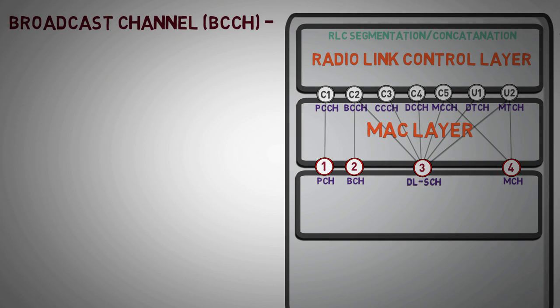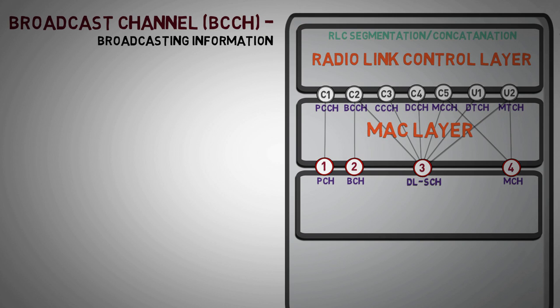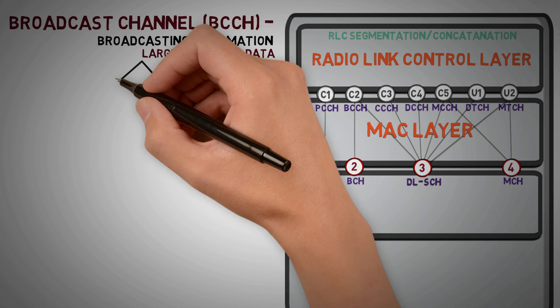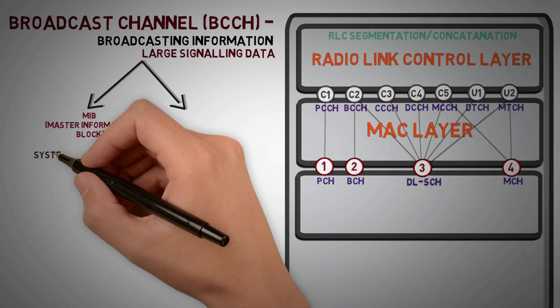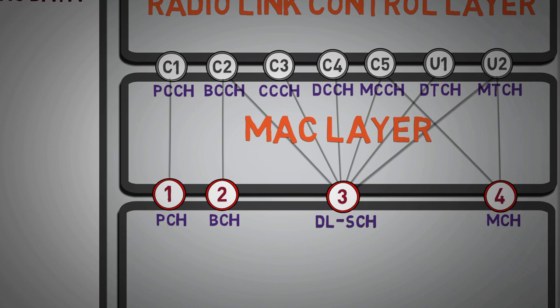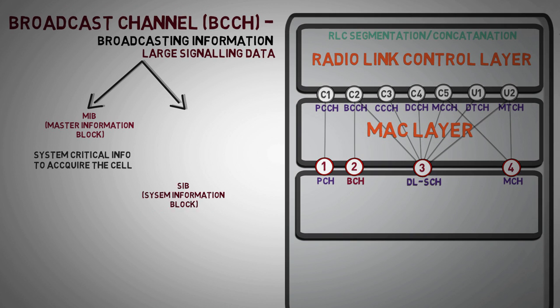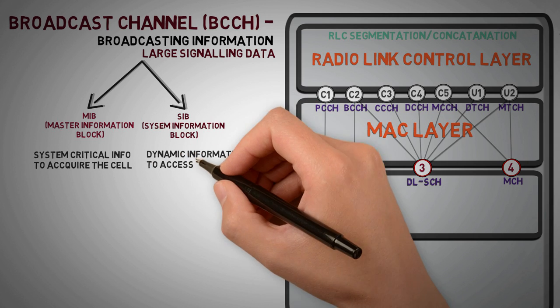Now, we said earlier that broadcast channel is used to broadcast system information, and this contains large number of signaling data. So, the system information is split into two-part. MIB, master information block. Since it carries a system critical information to acquire the cell, and it passes through broadcast channel. SIB, system information block. It contains other dynamic system information to access the cell.